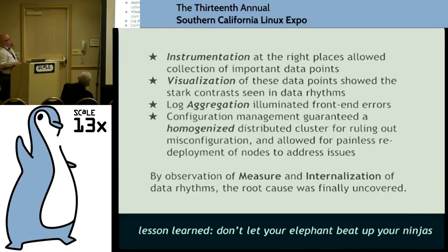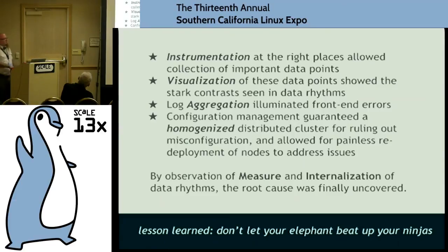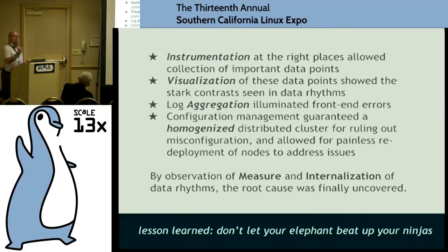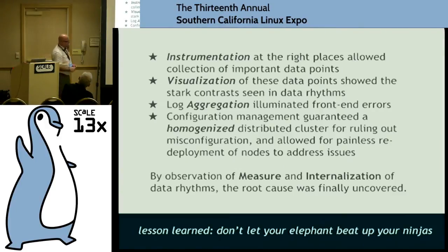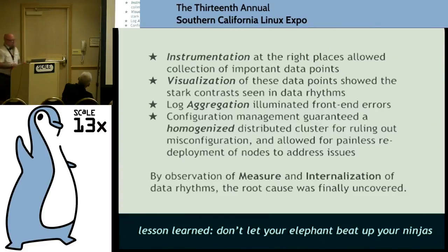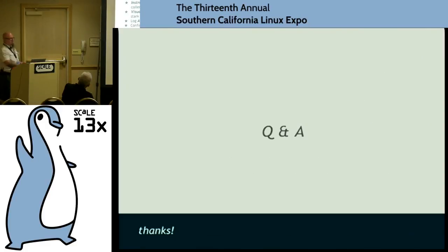Right back to those bullet points about measurement. The instrumentation was at the right places — it allowed me to collect the data I needed. The visualization helped me locate those events and do the correlation. Paying attention to the rhythmic structure of the data helped me know where to look. And configuration management allowed me to quickly get the affected nodes out and put them somewhere else — took 10 minutes. Lesson learned: don't let your elephant beat up your ninjas.